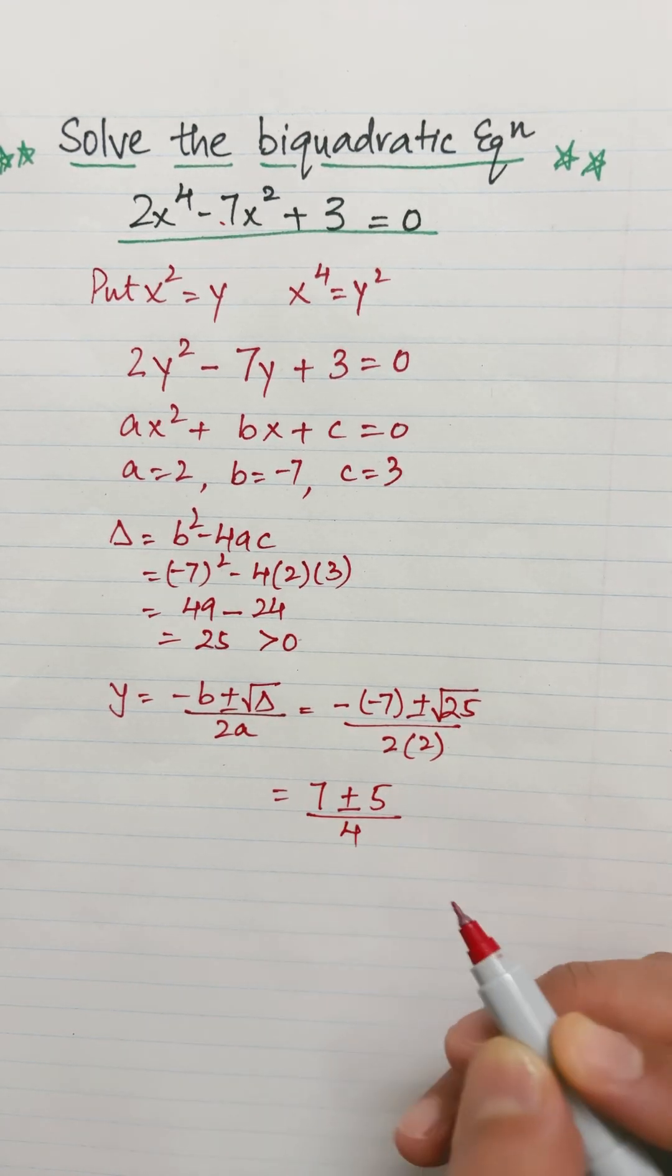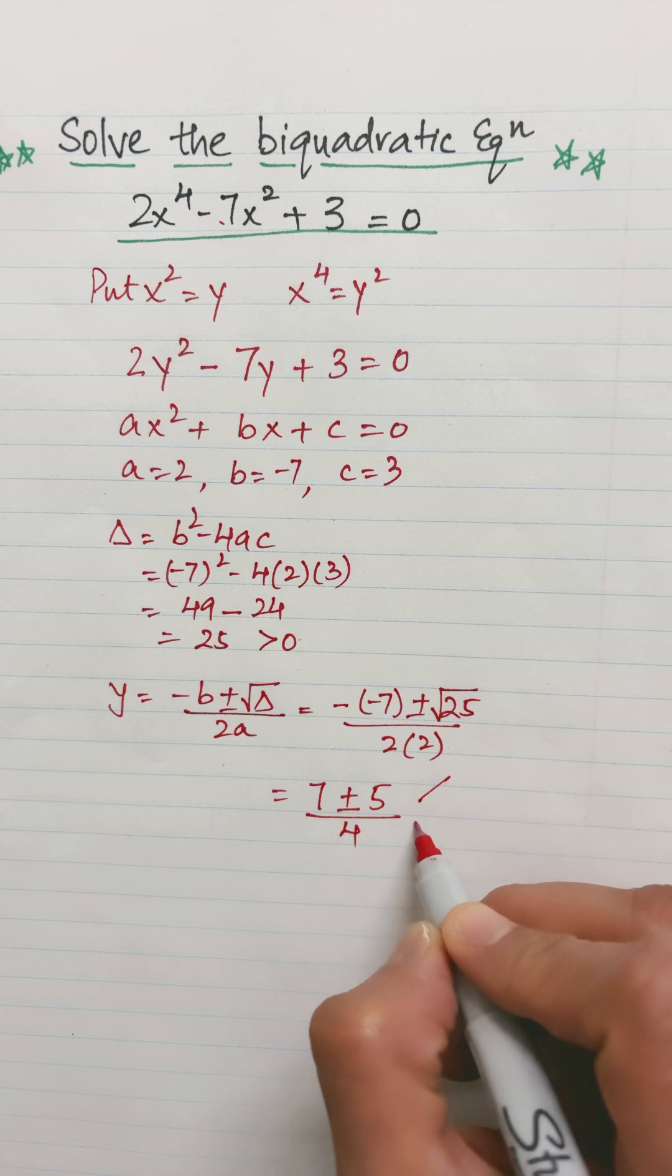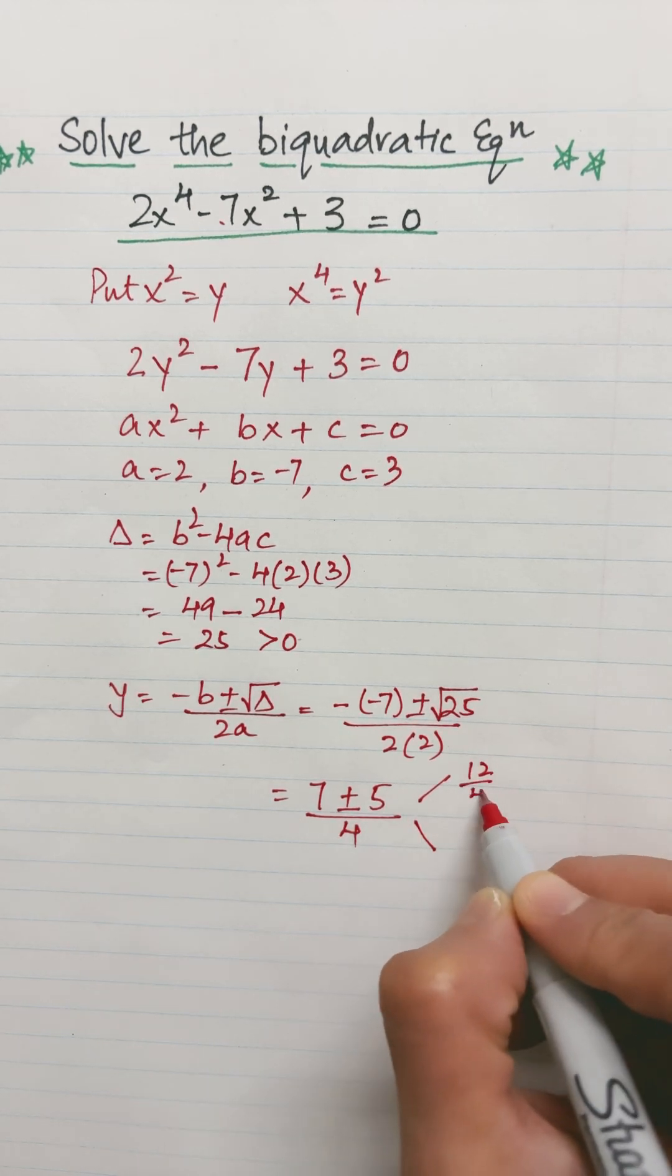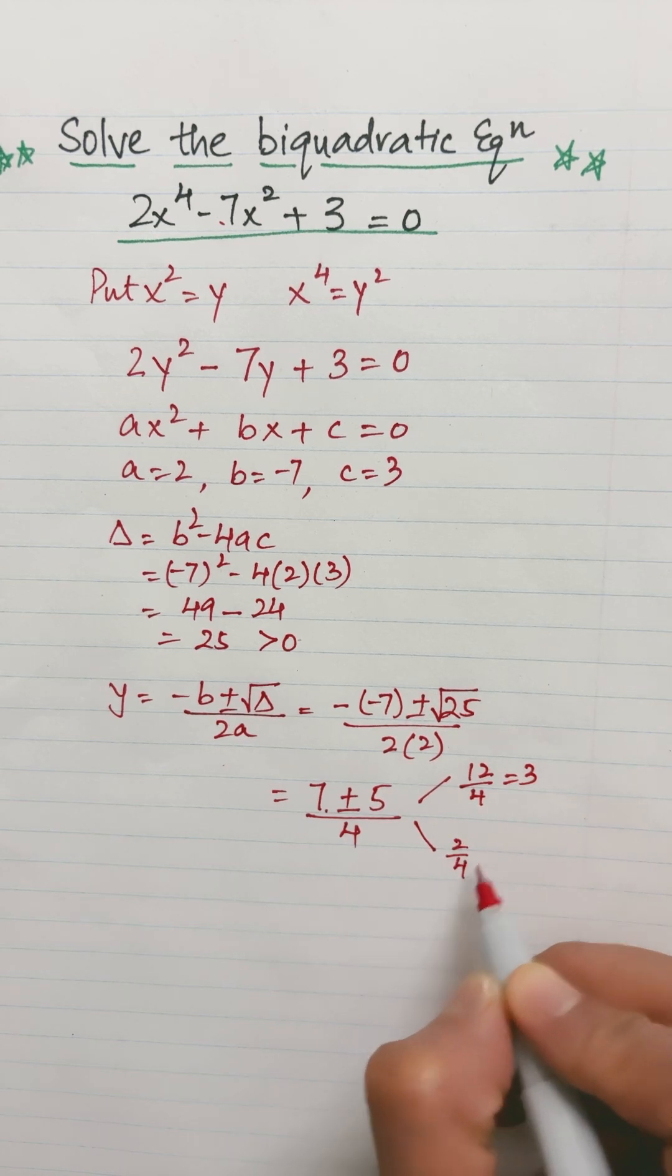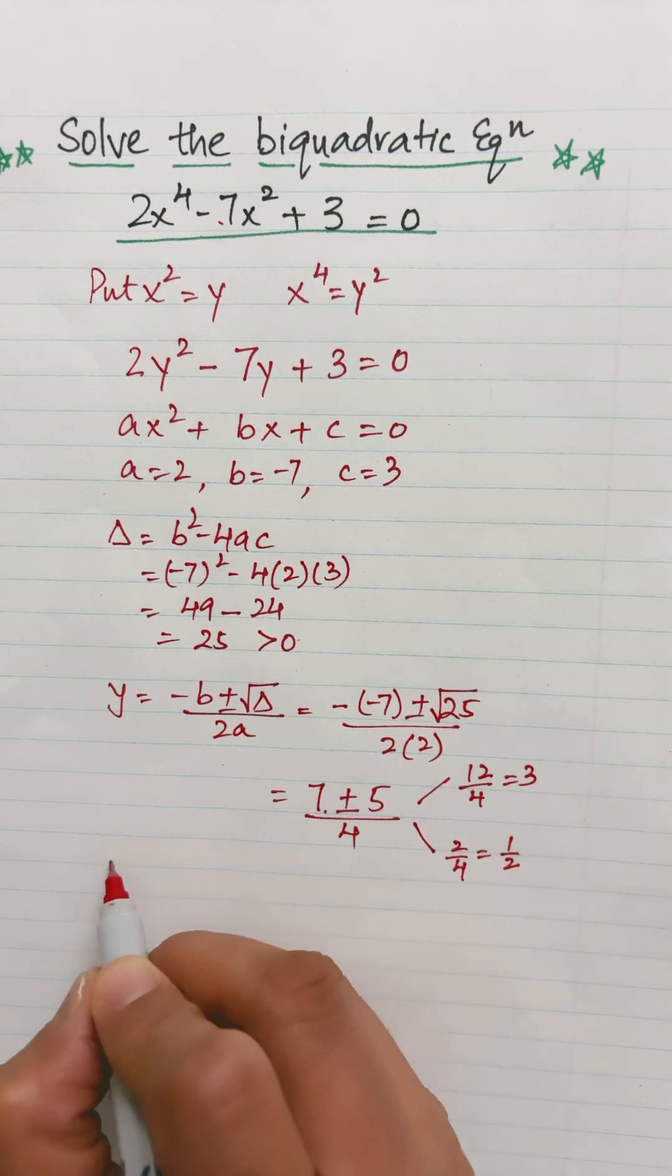So now it will give me two values. 7 plus 5 is 12, 12 divided by 4 is 3. 7 minus 5 is 2, and 2 over 4 is 1 half. So I got y as 3 and y as half.